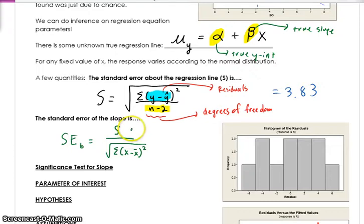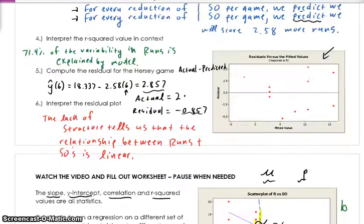So notice that this is in the units of y, and if you think about it, this is in the units of x. So this is just going to be unitless. It's a standard deviation of the slope. Actually, sorry, it's not unitless. It's in the units of the slope. Now, again, this is not something we compute. This is something we get from the computer output.